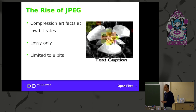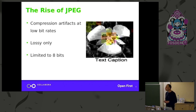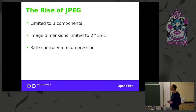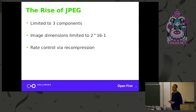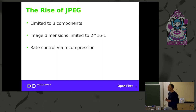There is a lossless standard for JPEG, but nobody really uses it, and it's a completely different codec framework. We're also limited to eight bits, so if you wanted to do medical or remote sensing, you can't use JPEG for that. More limitations: you can only use three components, there are limits on image dimensions to 16-bit, and one of the big issues is rate control — the only way to target a specific rate is to continually recompress, and each time you recompress you're losing data.